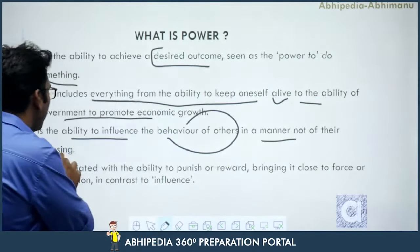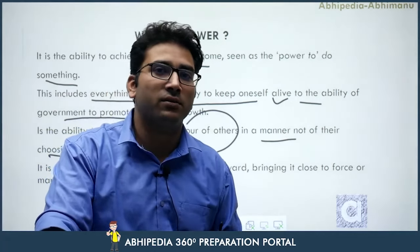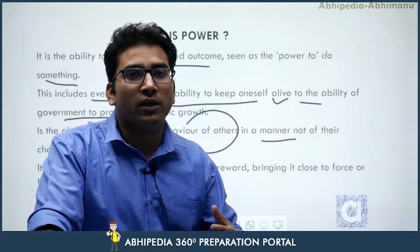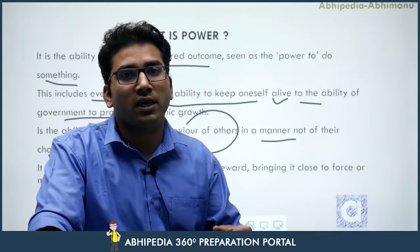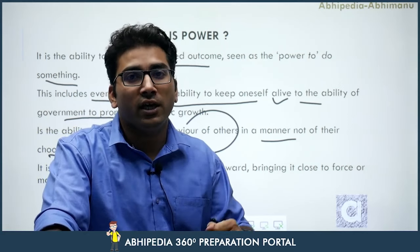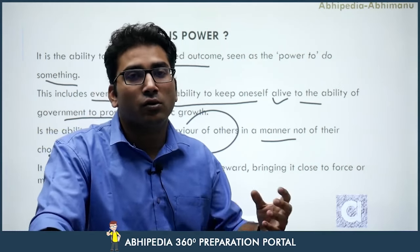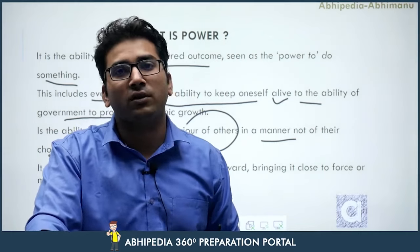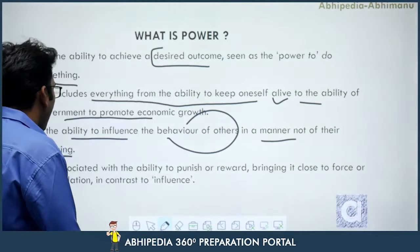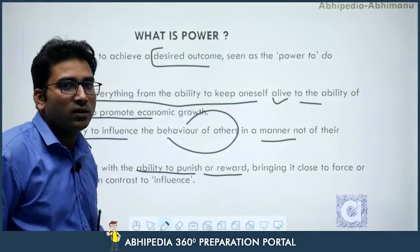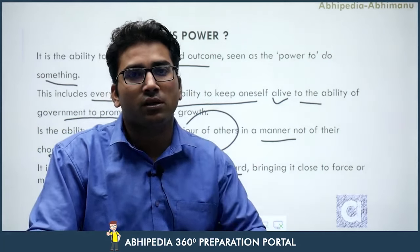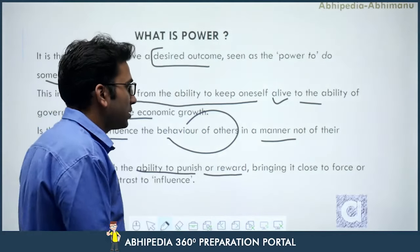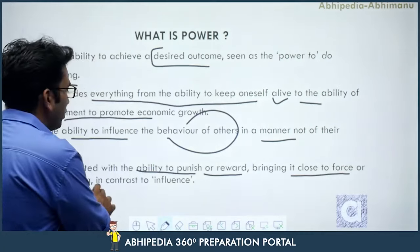Power is the ability to influence the behavior of others in a manner not of their choosing. If person A has power and person B does not, person A can influence person B to act as per his wishes — even without person B's consent. This is associated with the ability to punish or to reward. In a political context, power is both distributive and redistributive — it gives rewards and punishments based on the level of actions taken.